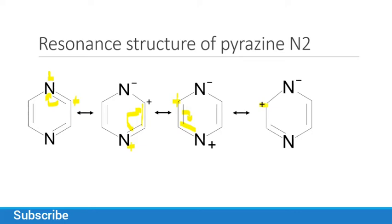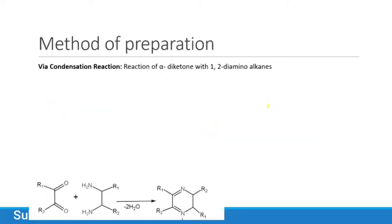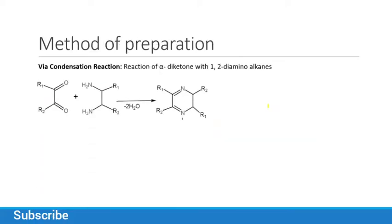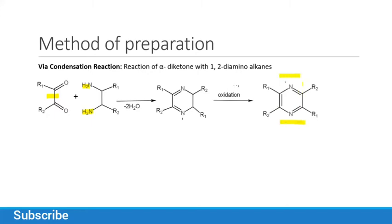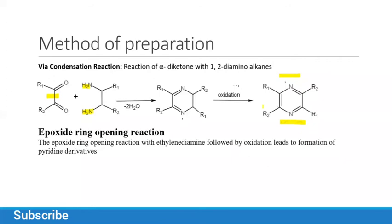Now the method of preparation: pyrazine is prepared by the reaction of alpha diketone with 1,2-diaminoalkanes through a condensation reaction. You have to withdraw water from this molecule to get an intermediate product, and then the oxidation of this intermediate product leads to pyrazine as the final product.